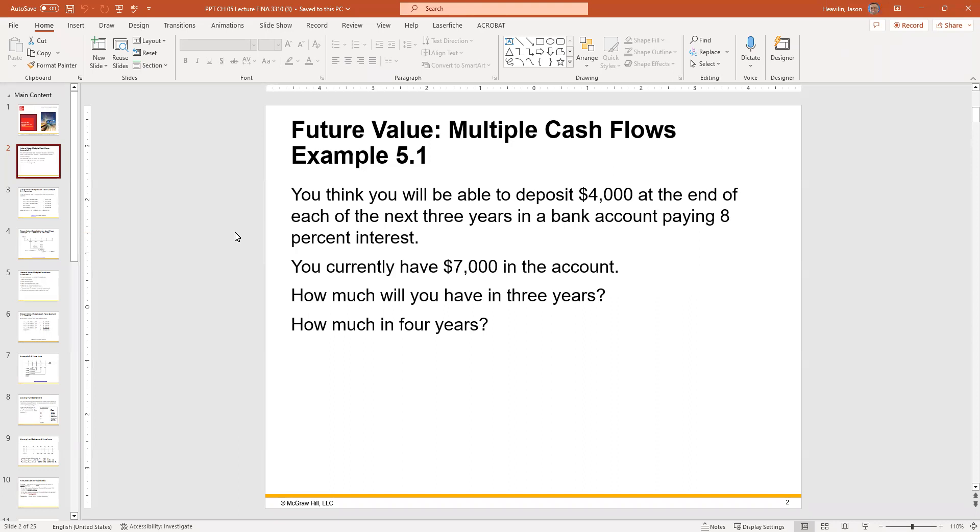So in this example, we go straight into it. You are planning to deposit $4,000 at the end of each of the next three years in a bank account paying 8% interest annually. You currently have $7,000 in the account. So there's already $7,000 sitting in the account, and then every year you're going to deposit $4,000. How much will you have in three years?